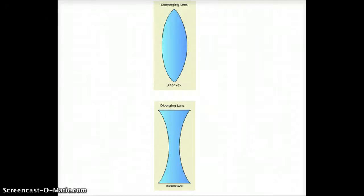We've seen that lenses of different shapes can have different effects on rays of light. For the two lenses seen here, the top lens is a converging lens that will bring light rays together, whereas the bottom lens is a diverging lens that will spread out light rays as they pass through them.